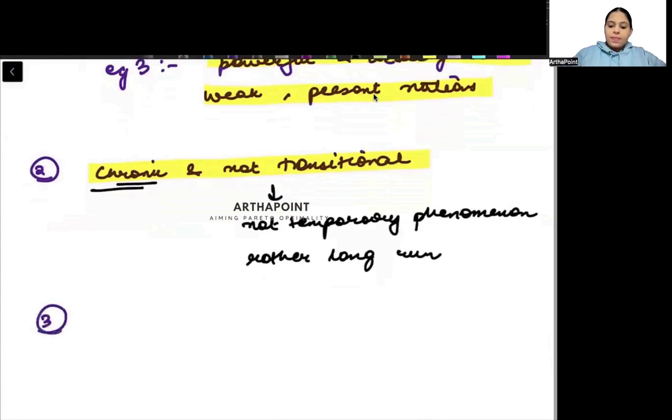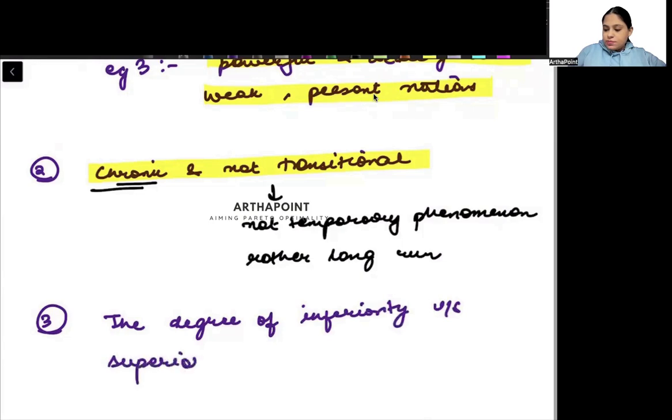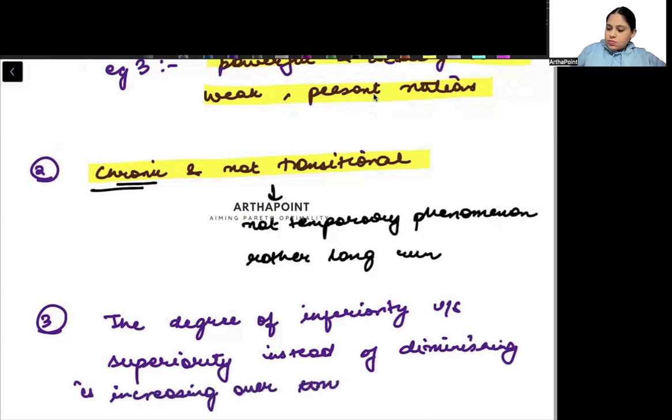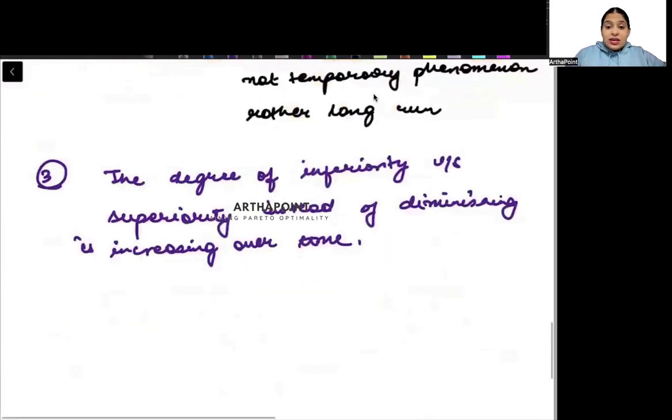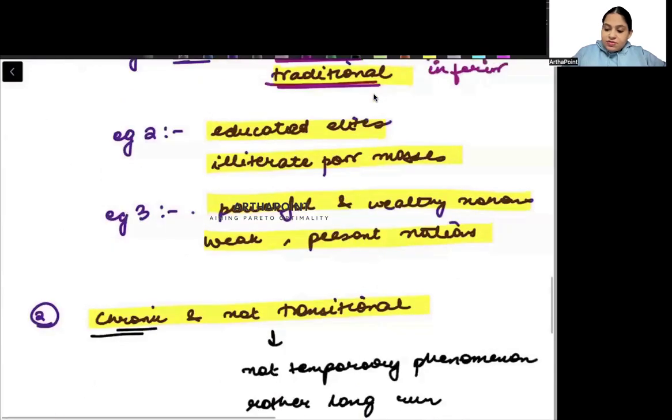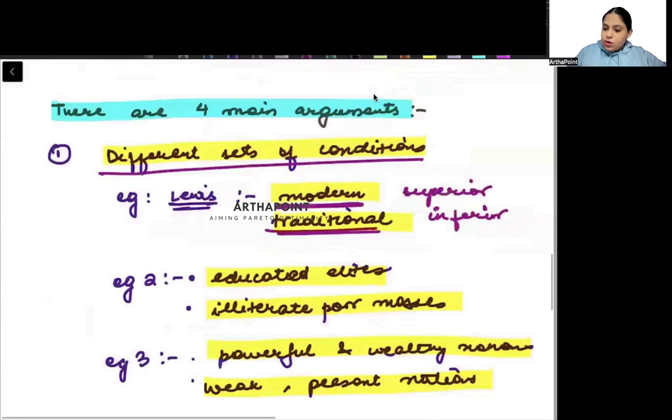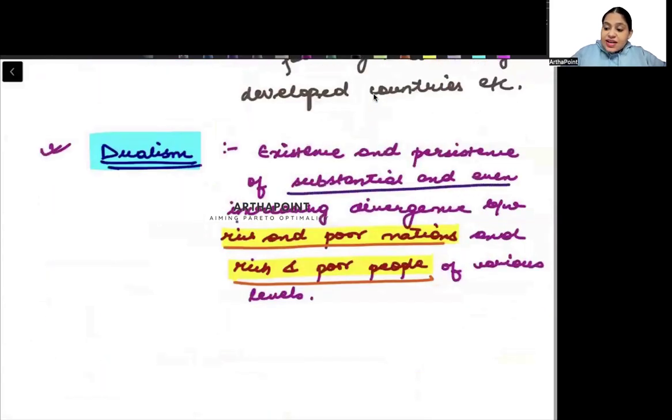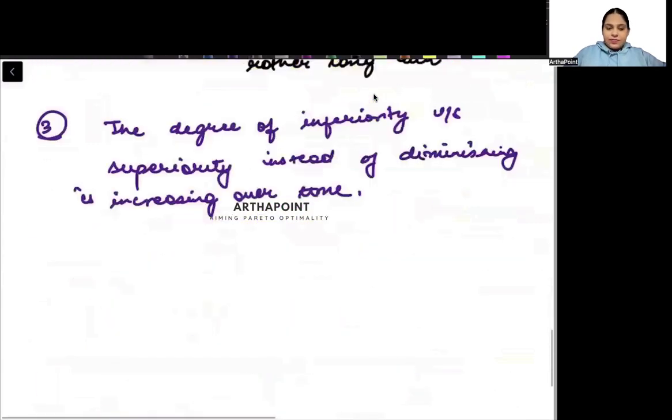Third point: the degree of inferiority versus superiority, instead of diminishing, is increasing over time. Instead of diminishing, it is increasing over time. The gap between rich and poor is not decreasing over time, or educated and illiterate is not decreasing over time. Rather, the gap is also increasing. This is what dualism theory is saying—persistence and increasing divergence. So the gap is increasing.